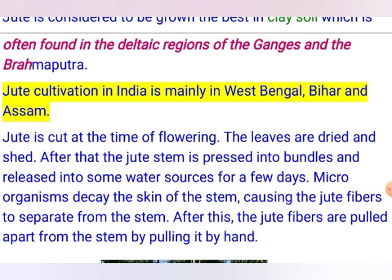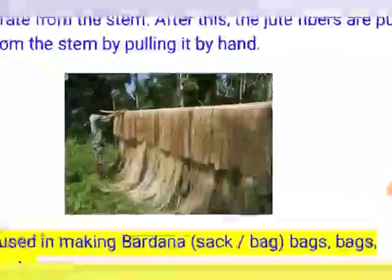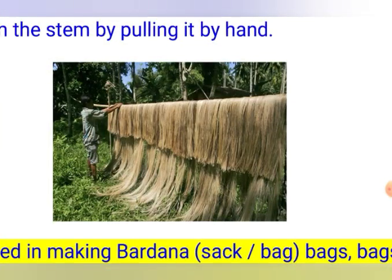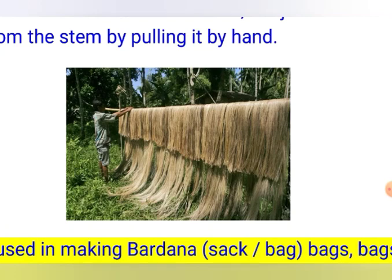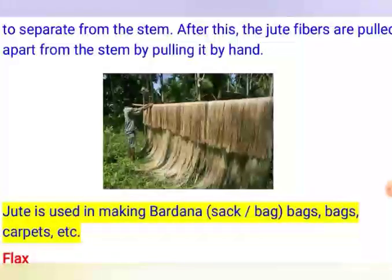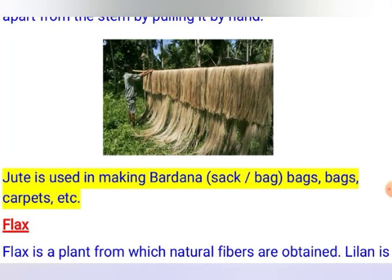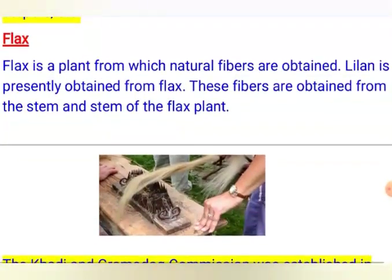When the fiber is loosened by microbial activity, it is pulled apart from the stem and then dried. In this picture, the fibers obtained from the jute stem are approximately 8 to 10 feet in length, matching the plant height. Jute is used for making bardhana — bags used to fill and store grains — and carry bags for grains, such as those used by the Food Corporation of India. Jute is also used for making carpets.